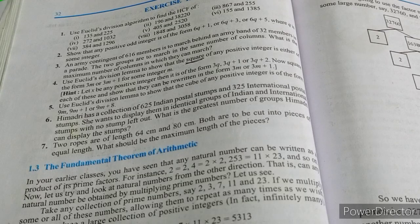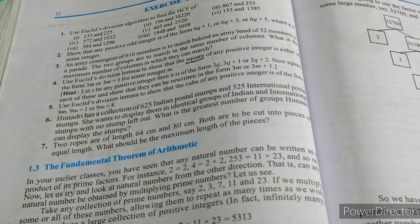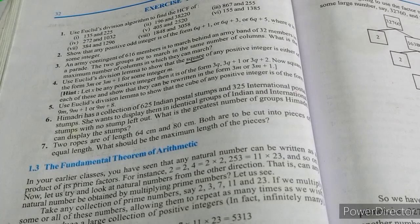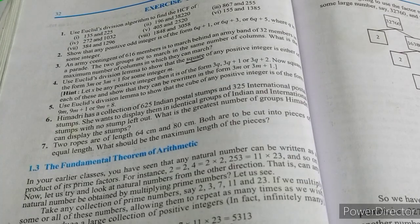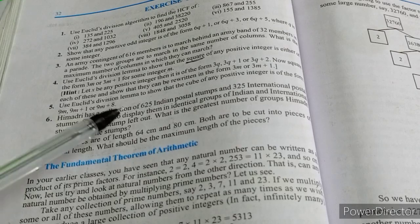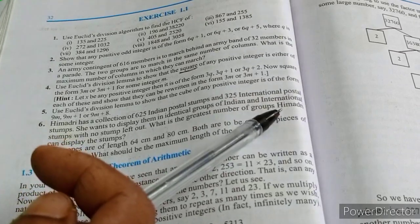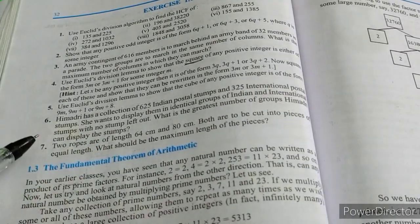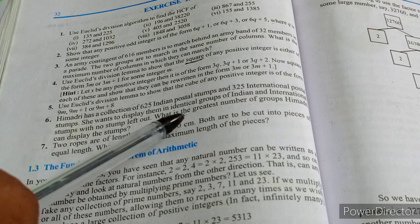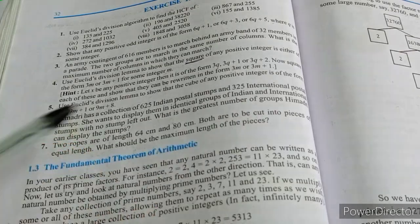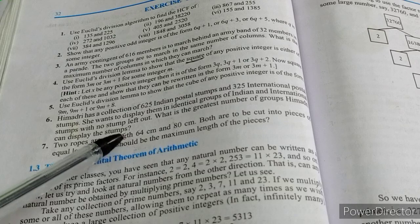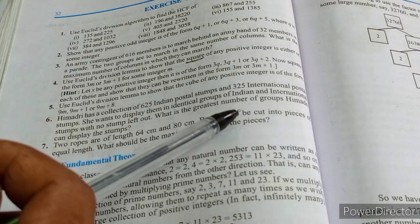Good evening dear children. Today we are going to discuss Exercise 1.1, Question Number 6. Himadri has a collection of 625 Indian postal stamps and 325 international postal stamps. She wants to display them in identical groups of Indian and international stamps with no stamp left out. What is the greatest number of groups Himadri can display the stamps?